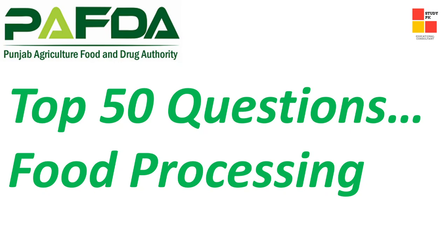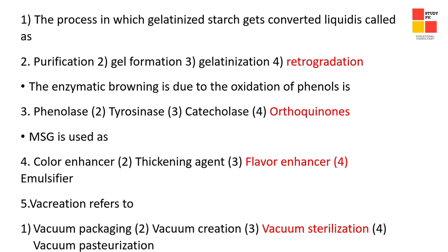Assalamu alaikum viewers, welcome to Study PK. In this video we will discuss food processing related important questions and MCQs. The first question is: the process in which gelatinized starch gets converted to liquid — is this purification, gel formation, gelatinization, or retrogradation? Option number four is the right answer: retrogradation.